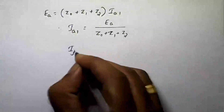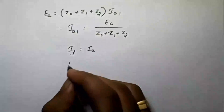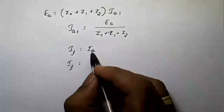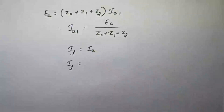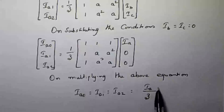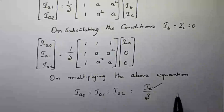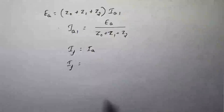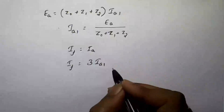The fault current IF equals Ia. From the initial condition, we already derived that Ia/3 = Ia1, so cross-multiplying gives IF = Ia = 3×Ia1. The fault current is IF = 3×Ia1, which is also equal to 3×Ia0 or 3×Ia2, since all three sequence currents are equal.